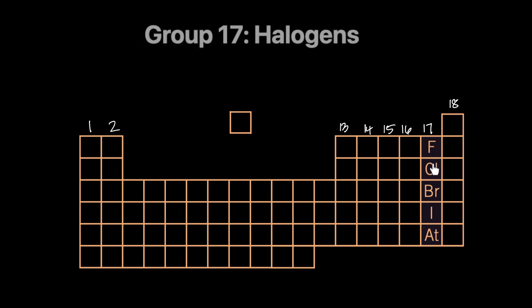We have five elements in group 17 called halogens. The reason they're called halogens is because that's a Latin term for salt-makers. These elements react very well with groups 1 and 2 to make neutral salts — ionic compounds. The five halogens are fluorine, chlorine, bromine, iodine, and astatine.